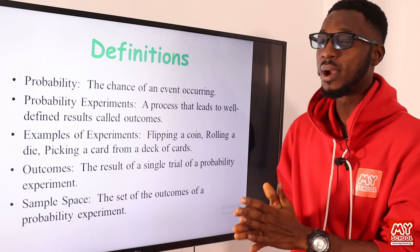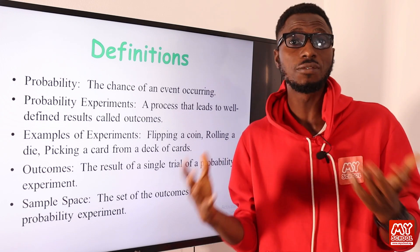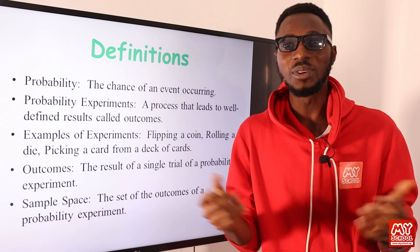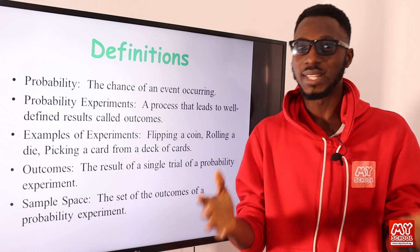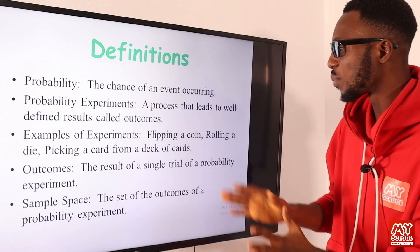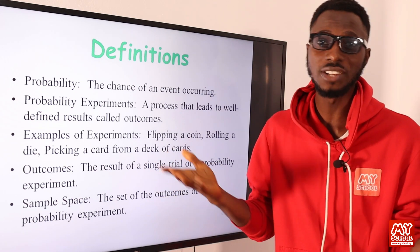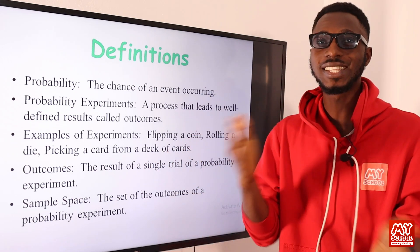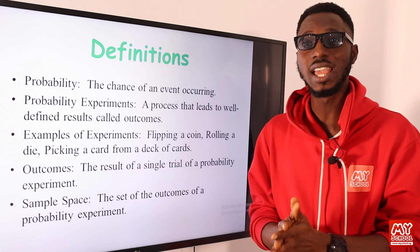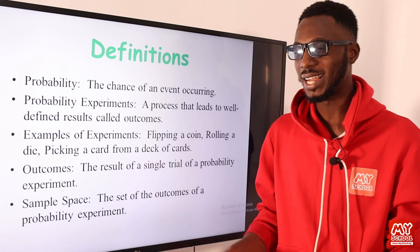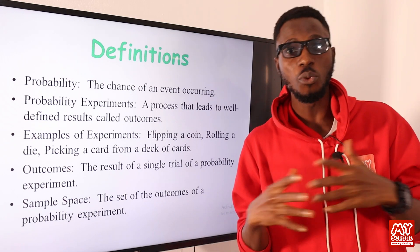So an experiment is a process that you engage to get outcomes or an outcome. For instance, if I want to tell how a particular thing tastes — probably soft drinks — I have to carry out an experiment, and that is gulping some quantity in. The outcome will determine whether it is sweet or bitter. Examples of experiments include flipping a coin — just like football matches where referees toss a coin before the match starts — rolling a die, and picking a card from a deck of cards.